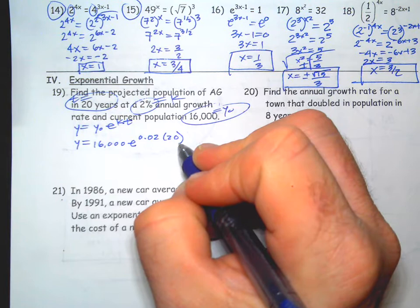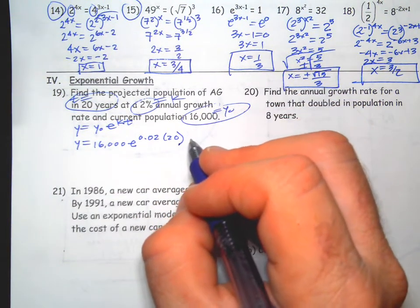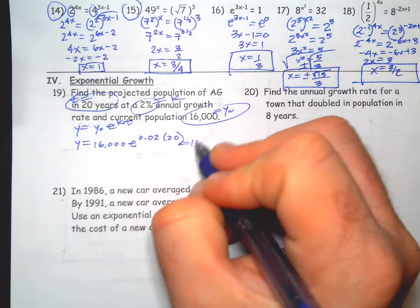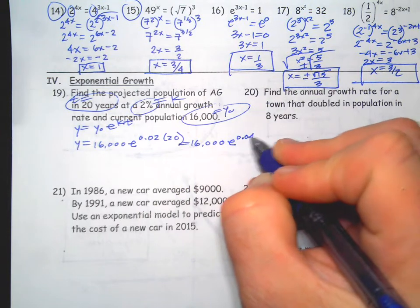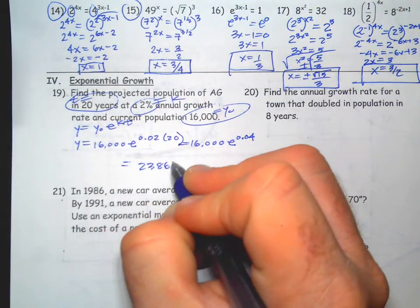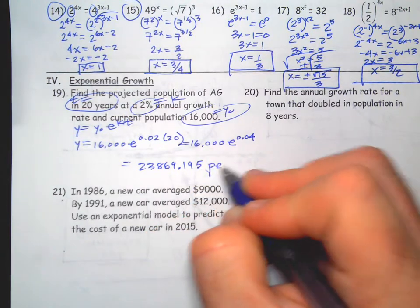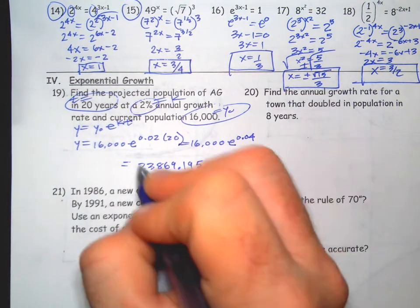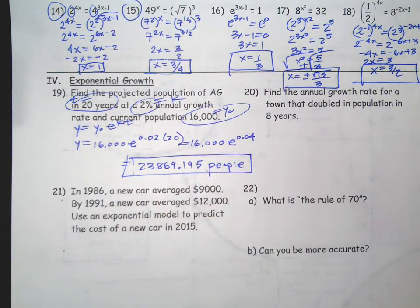For us, I'm going to say y equals 16,000 e to the 0.02 times t which is 20. The answer is 16,000 e to the 0.04. On your calculator it's 23,869.195 people, but you can't have part of a person. Did it say round to the nearest person? No, so don't do it, three decimals.